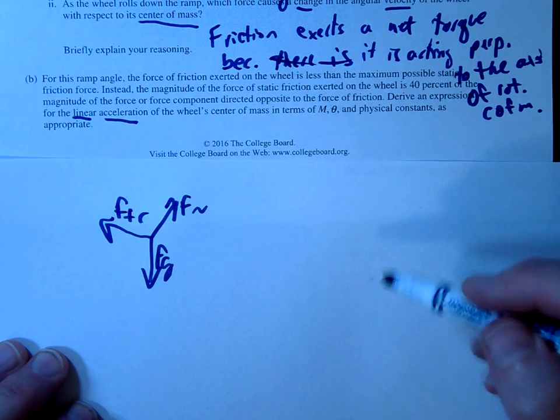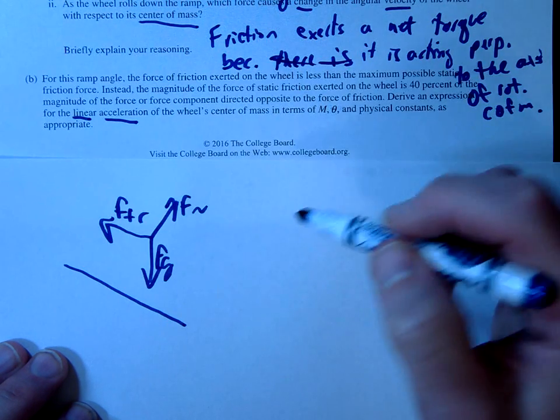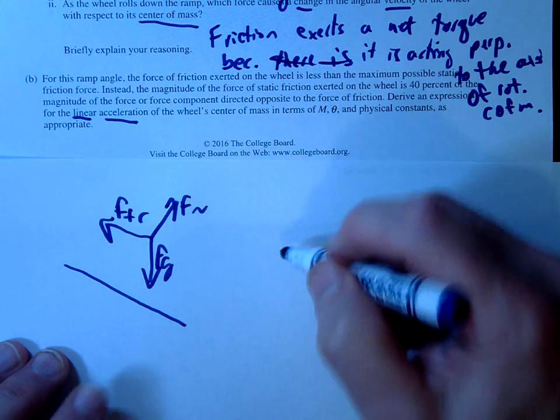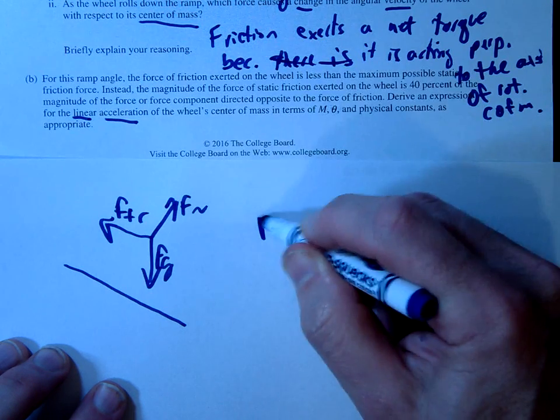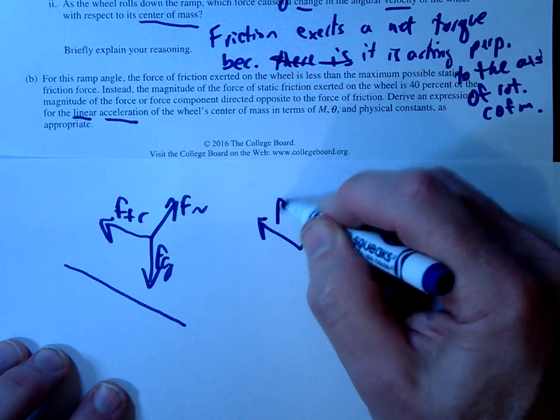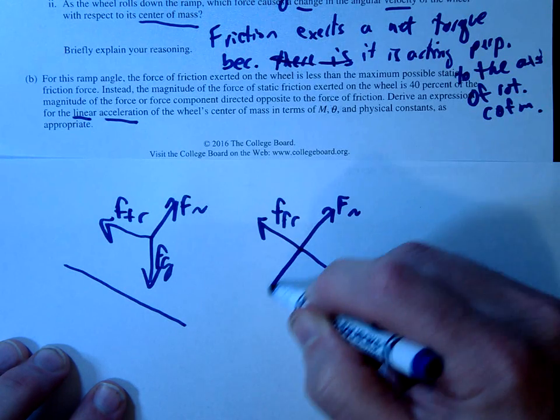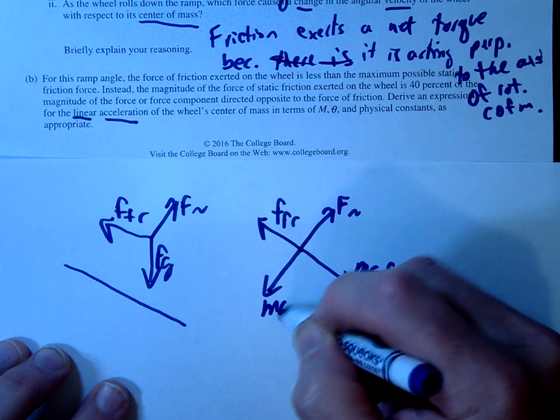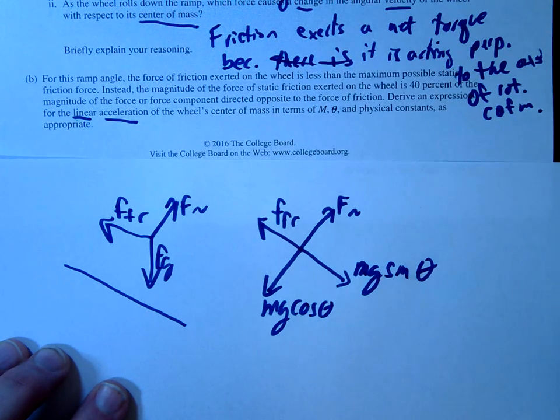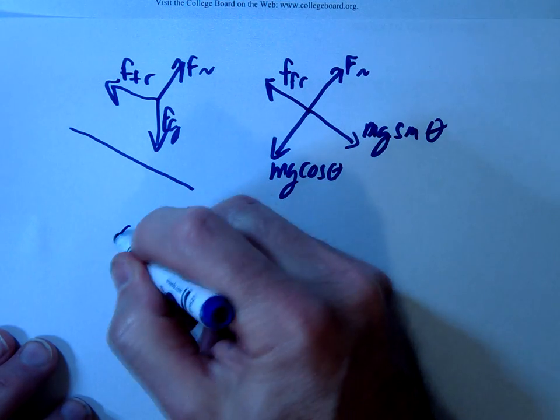So remember for ramps we want to rotate our axis of rotation. When we do that we're going to have a component of gravity. So I'm going to redraw this is just x's and y's. We're going to have a normal like this. We're going to have friction going this way and then we're going to break this down. So this would be our mg sine theta. This would be our mg cosine theta. I'm sure you've done this many times.